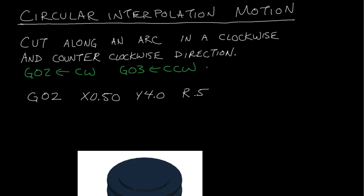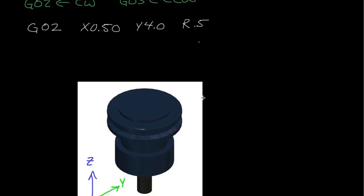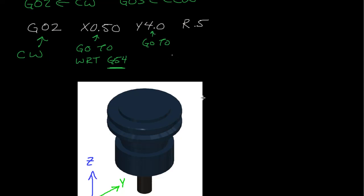In this case here we have some G-code, and this line of code tells me that I need to cut using a clockwise tool path. I'm going to end up at a specific point — going to X equals 0.5 with respect to G54, and to Y position 4 inches with respect to G54, and I want to cut with a 0.5 radius arc.